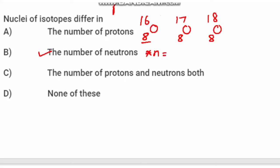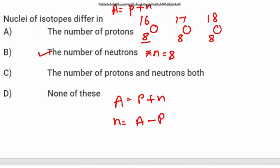Atomic number and number of protons are the same. The number of neutrons are different, because the atomic mass formula is: number of protons plus number of neutrons. So for Oxygen-16, the number of neutrons is 8; for Oxygen-17, the number of neutrons is 9; and for Oxygen-18, the number of neutrons is 10. This confirms that the number of neutrons is different in isotopes.